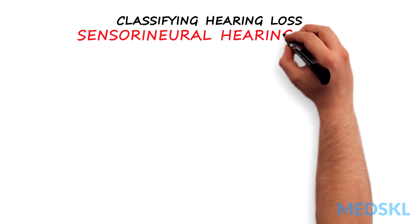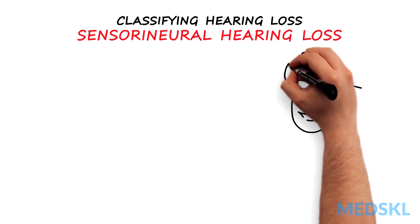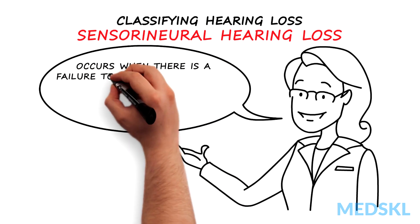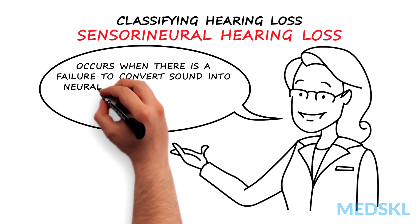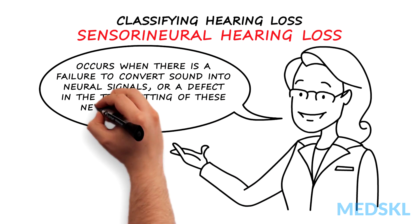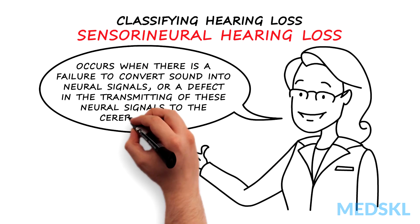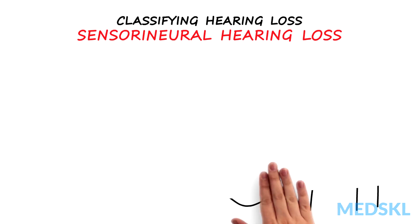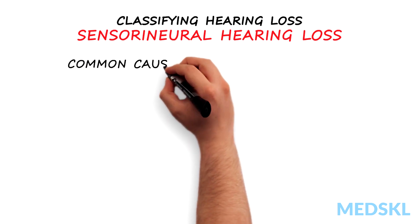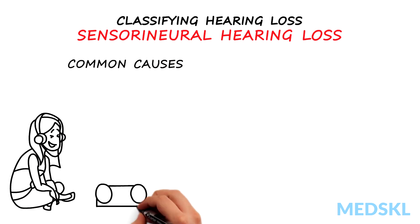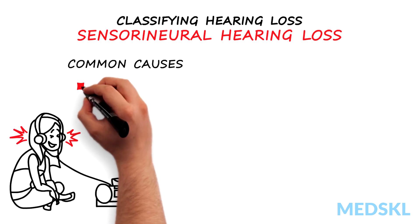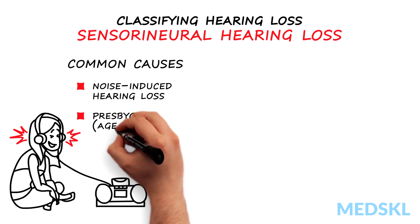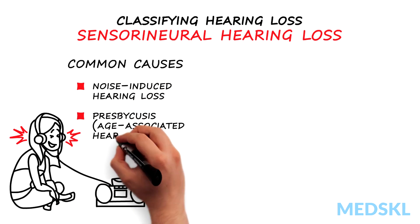Sensorineural hearing loss occurs when there is a failure to convert sound into neural signals or a defect in transmitting these signals to the cerebral cortex. Common causes include noise-induced hearing loss and presbycusis, or age-associated hearing loss.